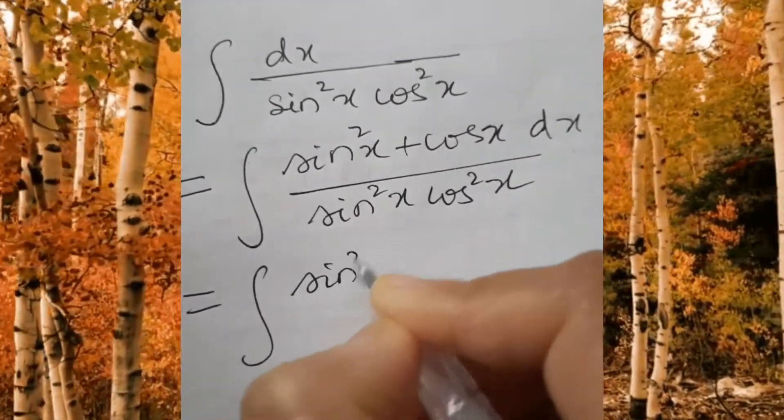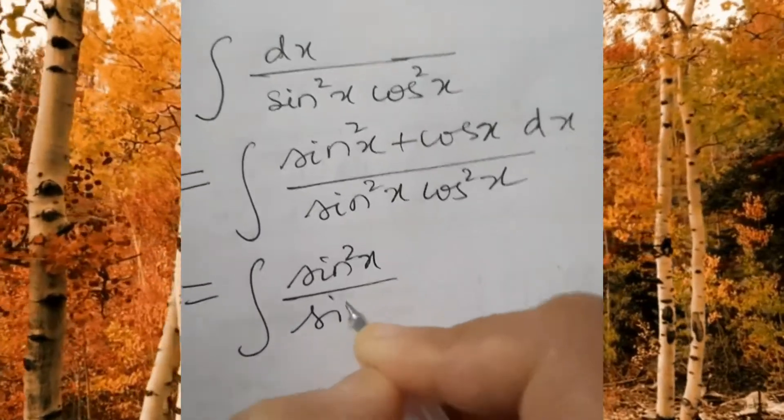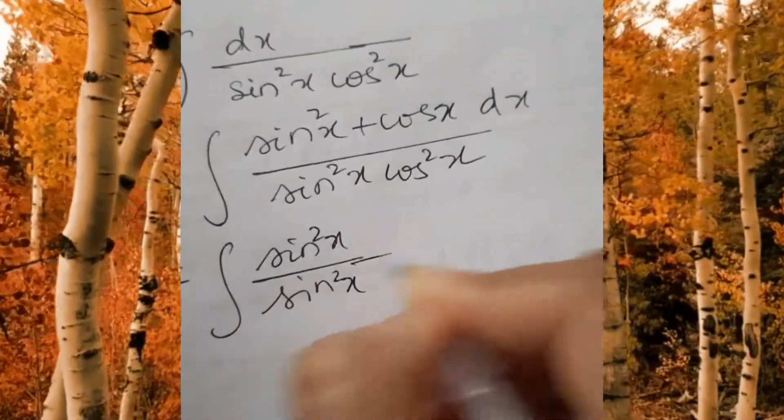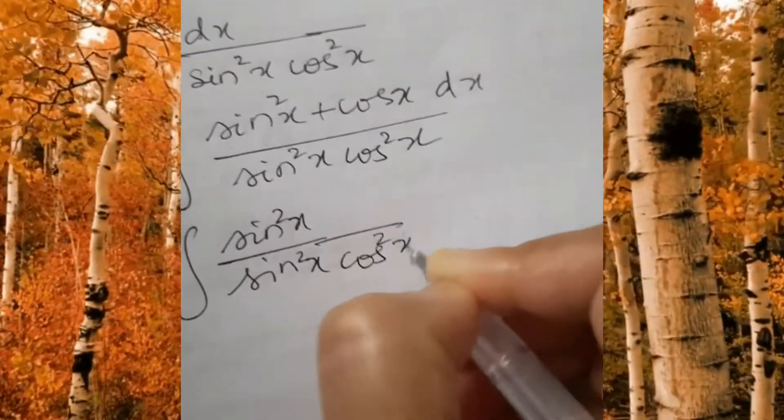After substituting for 1, we get sin square x plus cos square x divided by sin square x cos square x dx.